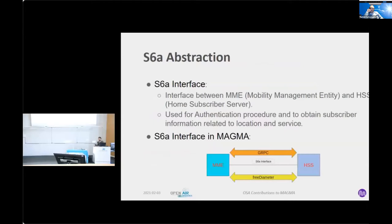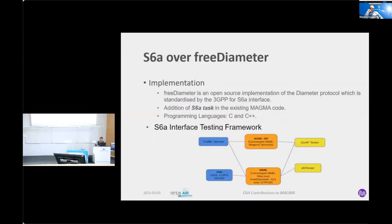The first contribution we carried out was the S6A abstraction. The S6A interface is the interface between the MME and the HSS, which is used for the authentication procedure and to obtain subscriber information related to both location and service. As described in the diagram, the S6A interface can support both gRPC for the MAGMA requirement and free diameter for the full 3GPP compliant OAI core. Free diameter is an open source implementation of the diameter protocol, standardized by 3GPP and designated to work on the S6A interface.